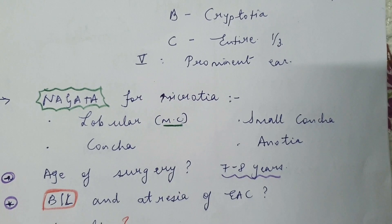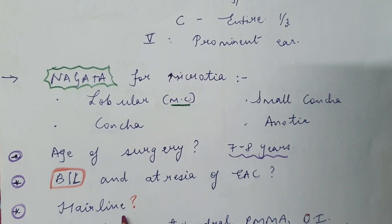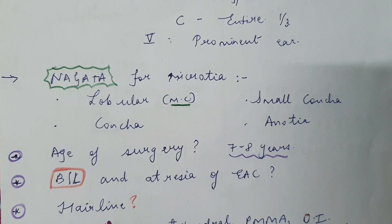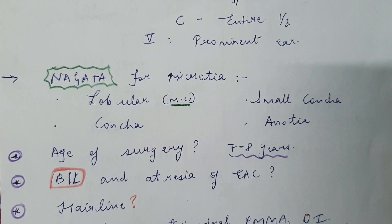A low hairline can interfere with the new ear we want to form. In these cases the hairline has to be treated — you can start the child on laser sessions to remove hair from the area where we want to make the ear. In older times there used to be a scalp roll technique where the scalp from that area was rolled up, the ear reconstructed, and the roll put back into place. That technique is now of historical interest.